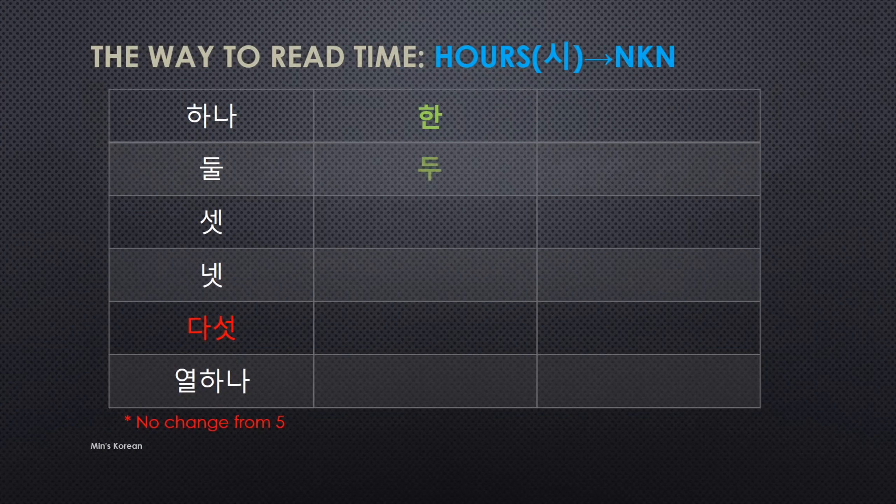From 5 onward, there's no change — just say the number and 시 together: 다섯 시, 여섯 시, 일곱 시, and so on. And for 11, 열 하나 — when combined with 시, 하나 becomes 한, so you say 열 한 시.